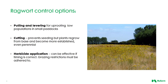Pulling and levering for uprooting works for low populations in small paddocks. Cutting prevents seeding, but plants regrow from the base and become more established, often becoming perennial. Herbicide applications are effective, of course, if the timing is correct, and grazing restrictions must be adhered to as well.